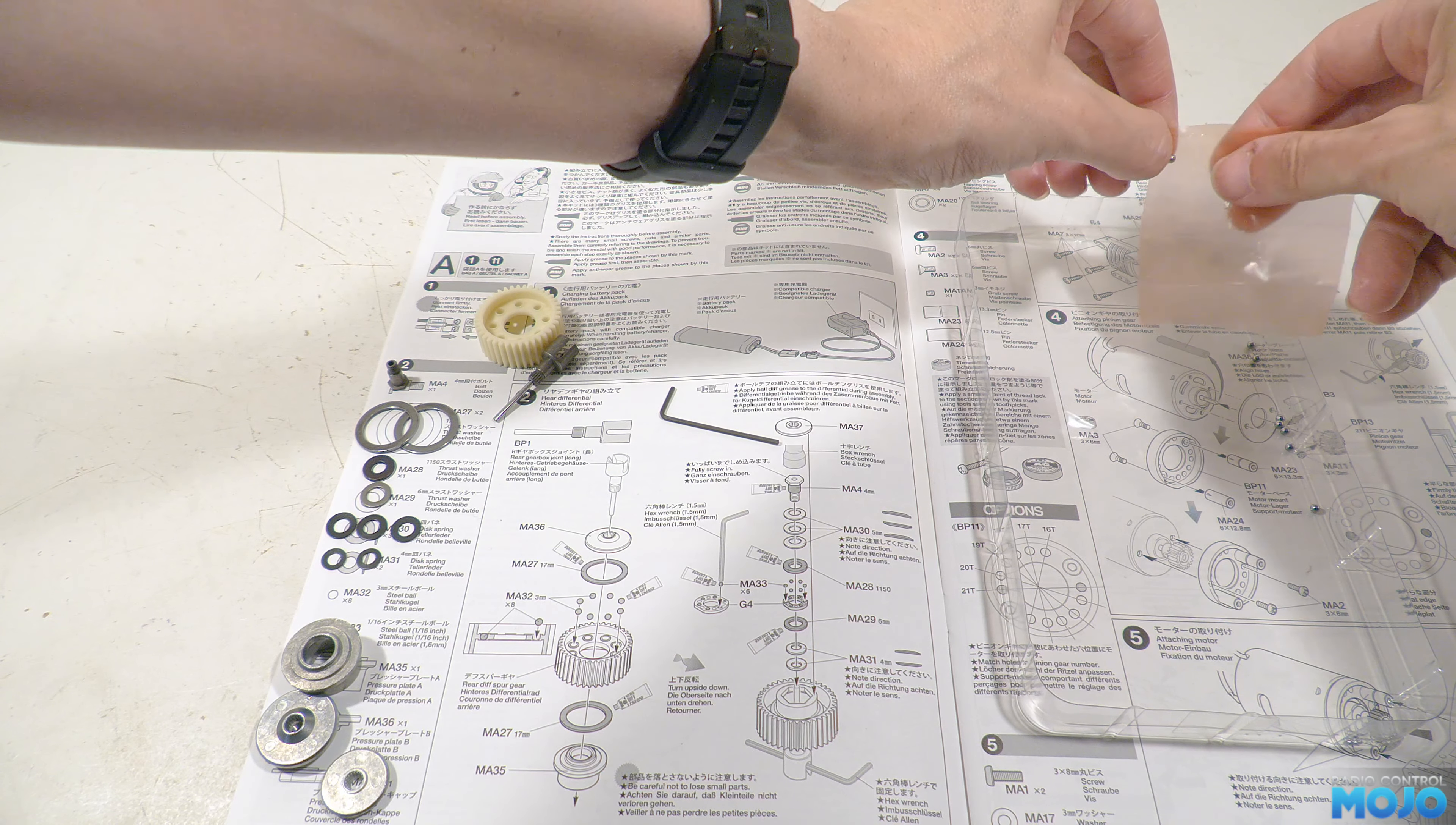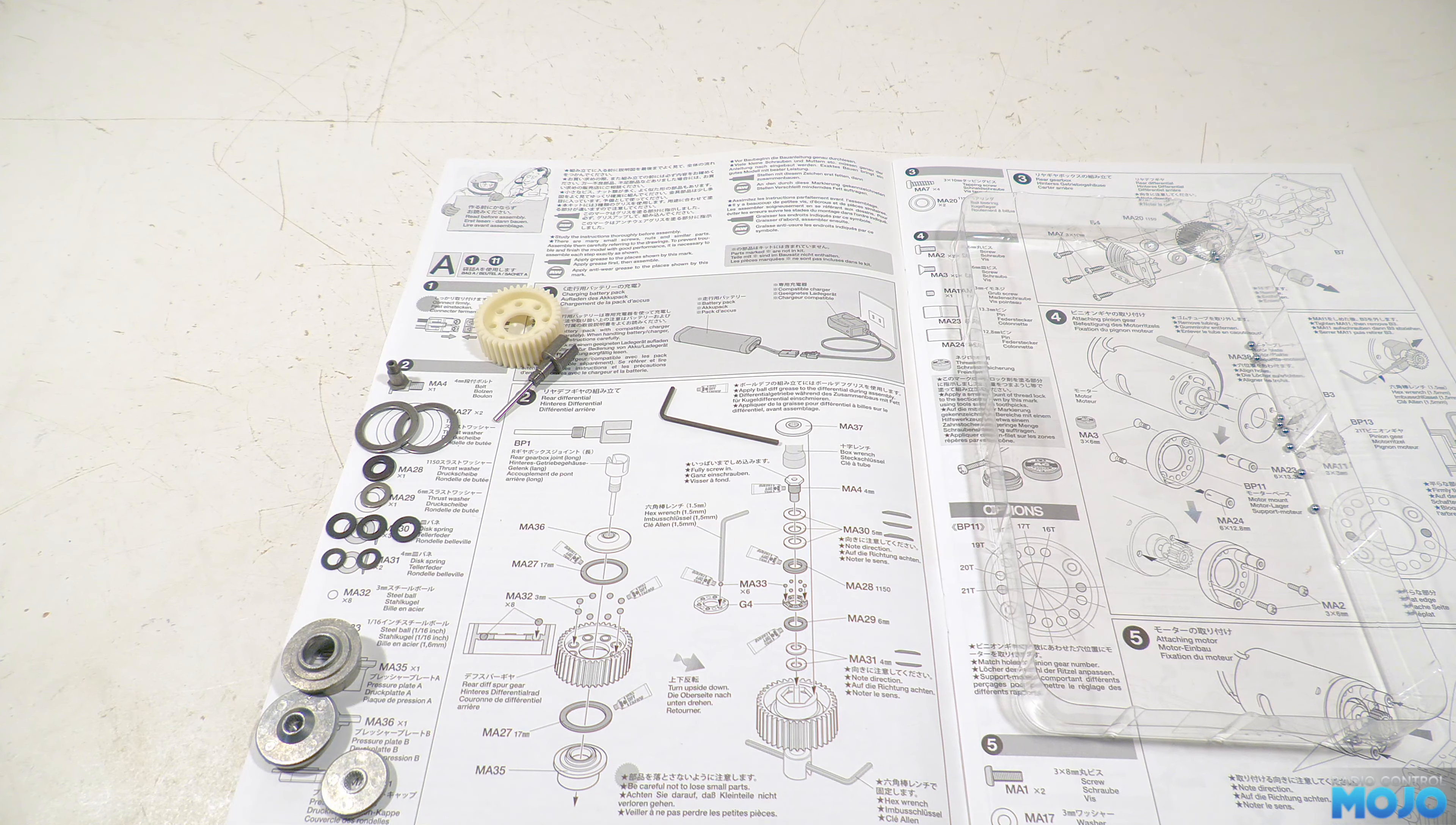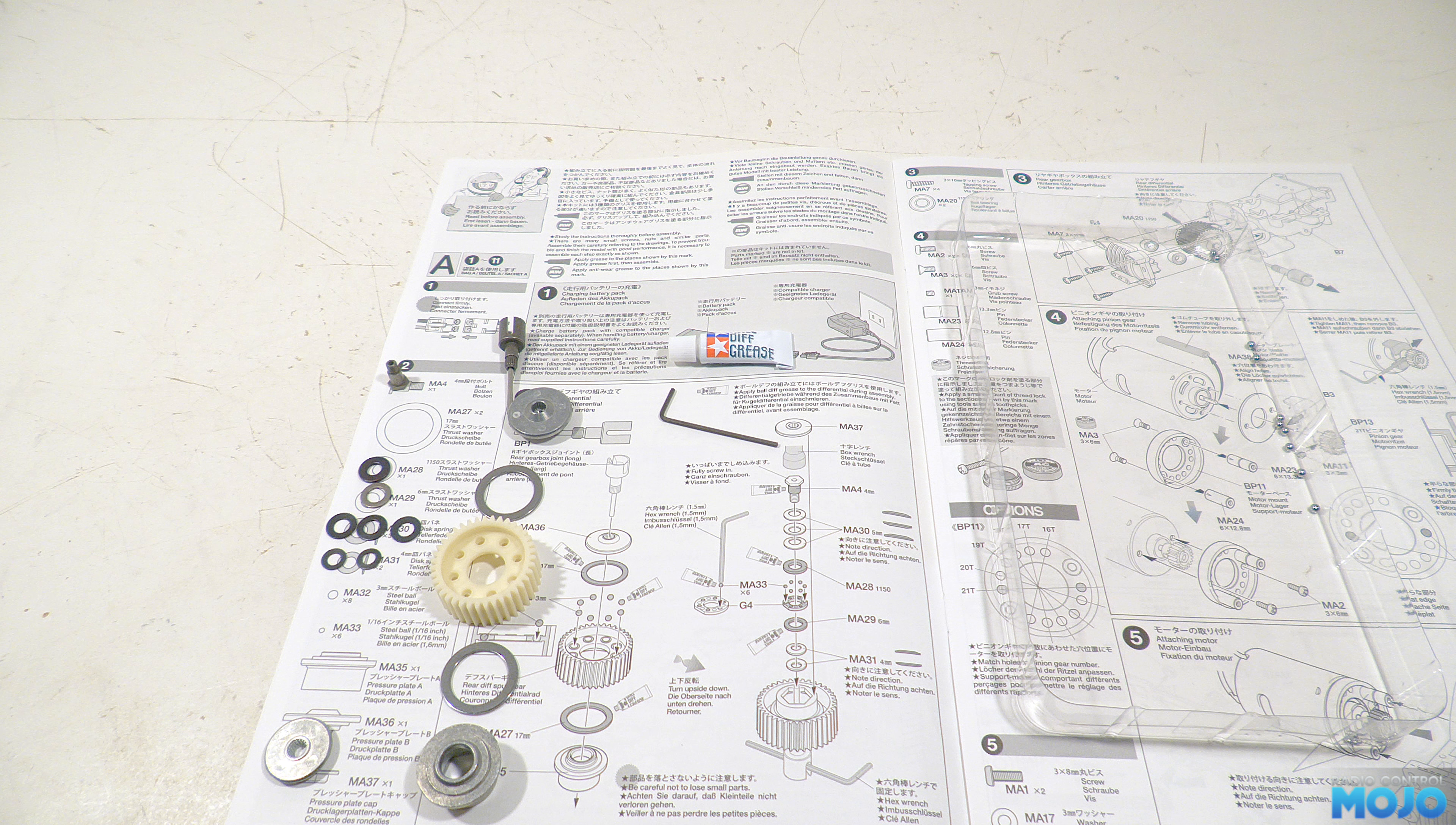The assembly of this diff needs to be just right. All the parts need to be assembled correctly, or it simply won't work as it should. Now I'm going to lay out the parts in the order of assembly, matching with the diagram. From top to bottom we have the pressure plate B, a thrust washer, diff gear, another thrust washer, and pressure plate A.